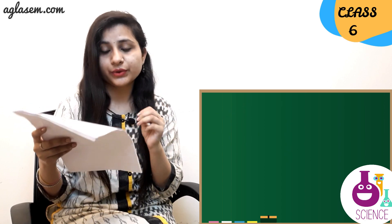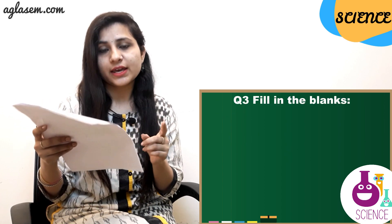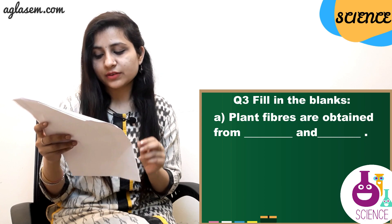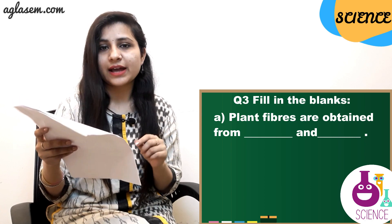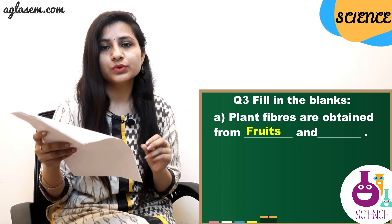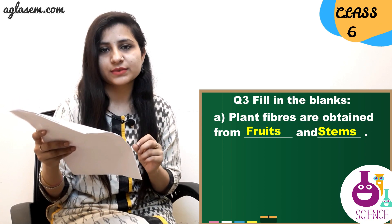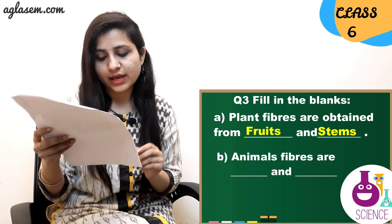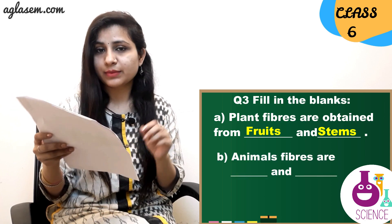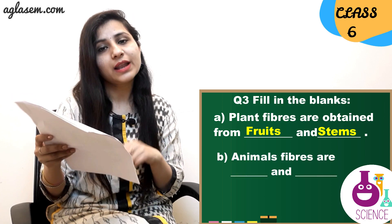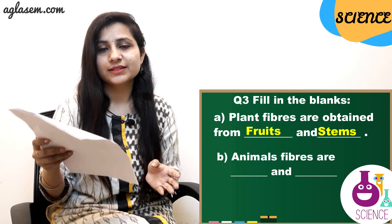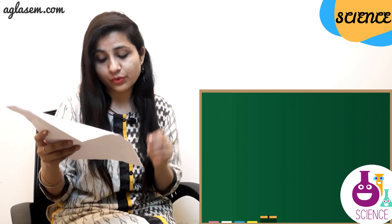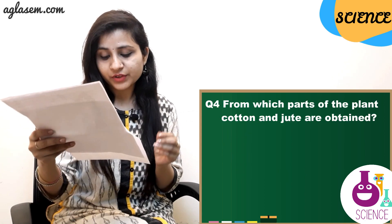Question 3: Fill in the blanks. (a) Plant fiber is obtained from _____ and _____. The answer is: fruits and stems. (b) Animal fibers are _____ and _____. The answer is: wool and silk.